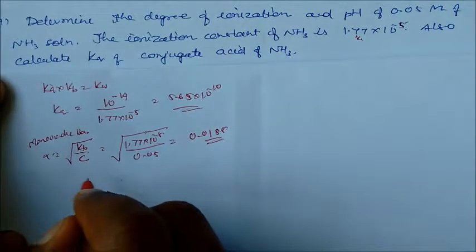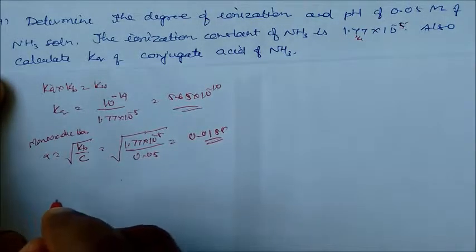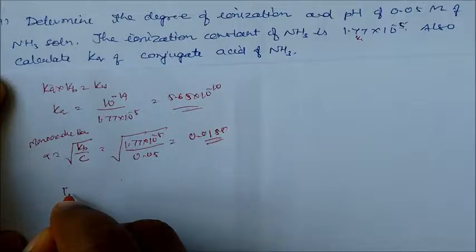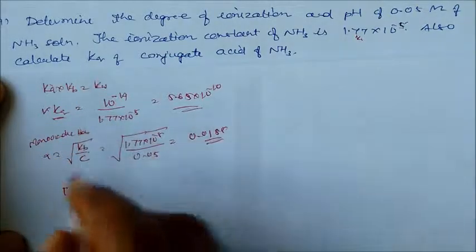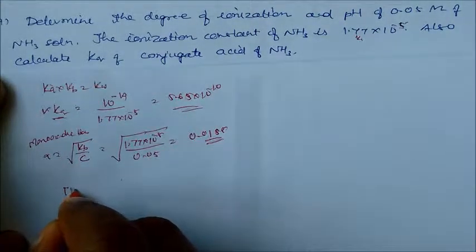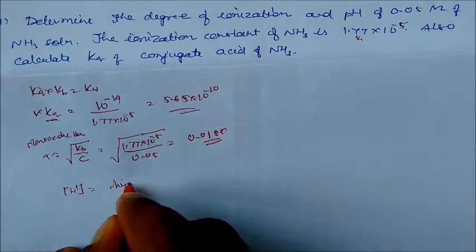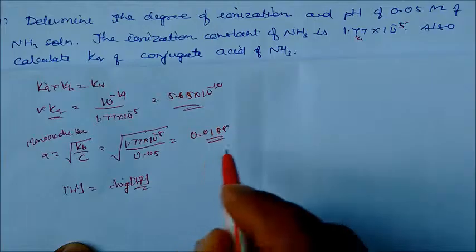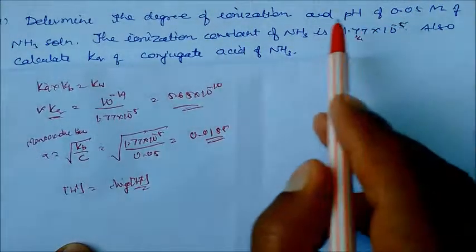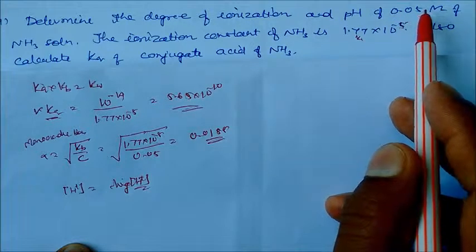To find the pH, we need the concentration of H⁺. We calculate pH = −log[H⁺]. If we know OH⁻, we can use the concentration of ammonia, which is 0.05 M, to determine the answer.